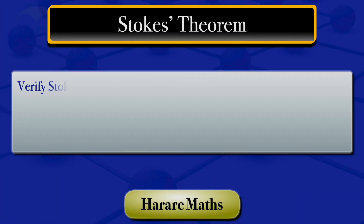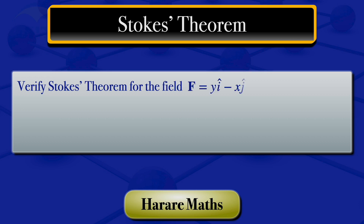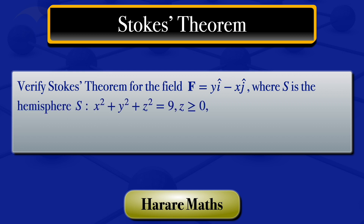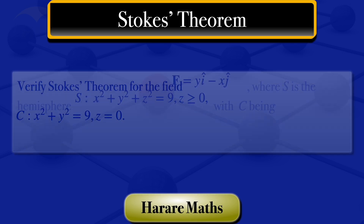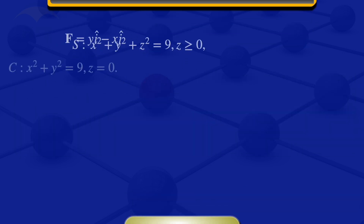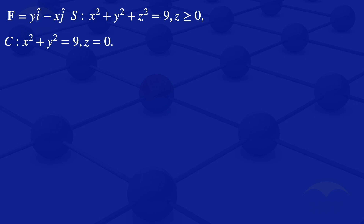In this video, I'm going to verify Stokes' theorem for the field F which equals yi minus xj, where S is the hemisphere x² + y² + z² = 9, where z ≥ 0, with C being the curve x² + y² = 9, z = 0. We are given that F, that hemisphere, and that curve C.